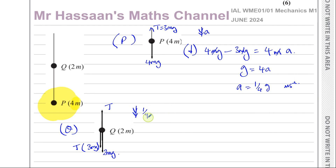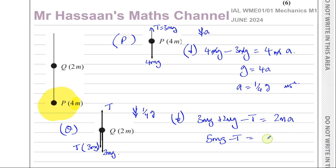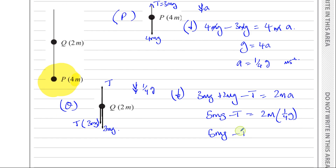We now know the acceleration is g/4. Taking down as positive because it's going downwards, we have 3mg plus 2mg — both acting down — minus T, because that's acting up, equals the mass 2m times the acceleration g/4. So 5mg minus T equals 2m times g/4, which gives half mg. Therefore 5mg minus T equals half mg.